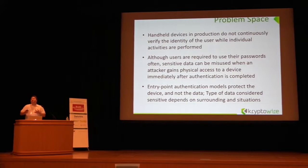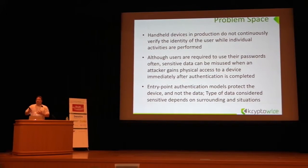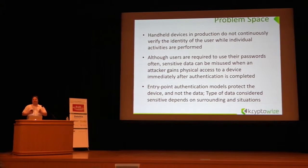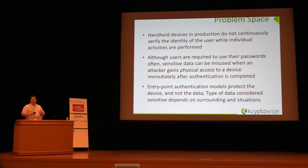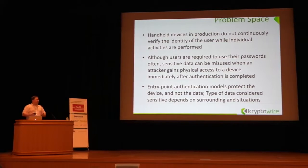Any point-of-authentication model does not necessarily protect the data; it protects the device. The term 'data considered sensitive' basically depends on other things. My documents are sensitive, but the moment I put in the pin I automatically access everything. So the idea we have is: can we actually create an authentication system that can continuously authenticate the user and at the same time protect services at different levels?